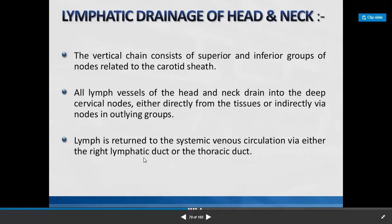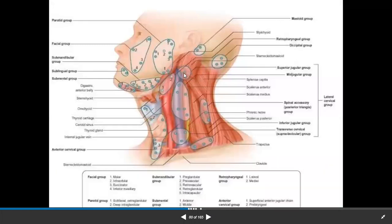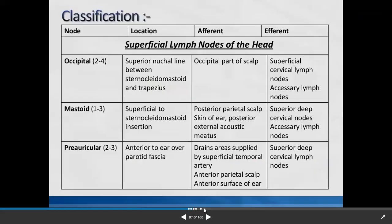Lymph is returned to systemic circulation via either the right lymphatic duct or the thoracic duct. In the face we have facial group of lymph nodes; in the parotid region there are several others — submandibular, submental, retropharyngeal, and anterior cervical group. In the occipital region we have two to four occipital lymph nodes located at the superior nuchal line between sternocleidomastoid and trapezius, receiving lymph from the occipital part of the scalp. Efferents drain to superficial cervical and accessory lymph nodes.